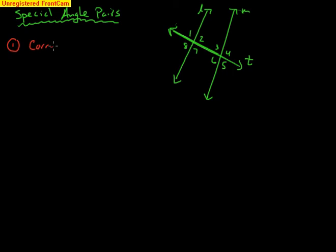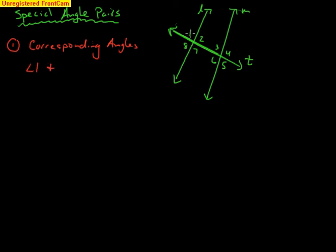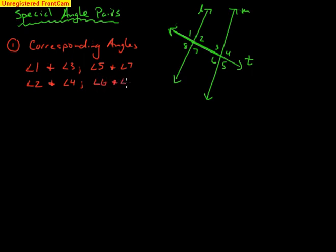The first pair is called corresponding angles. Corresponding angles are in the same position along the transversal. If we look at angle one and slide down T, angle three is in the same position — so angles one and three are corresponding. Angle two and angle four are corresponding. Angle five and angle seven are corresponding. Angle six and angle eight are corresponding. Just slide down the transversal.